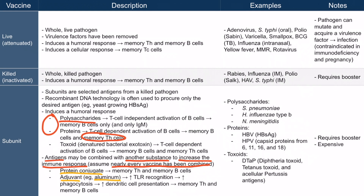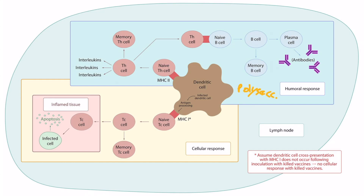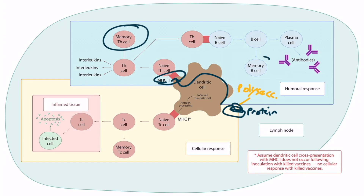Protein conjugates are useful because they can be combined with polysaccharides. A polysaccharide combined with a protein conjugate can be presented on MHC class 2, activating helper T cells and ultimately inducing the formation of memory helper T cells in addition to memory B cells.